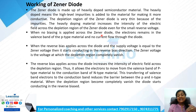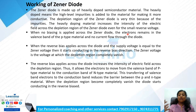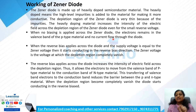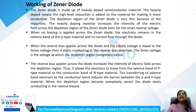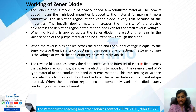The heavily doped material increases the intensity of the electric field across the depletion region of the Zener Diode even for small reverse voltage. When no bias is applied, electrons remain in the valence band of the P-type material and no current flows. When reverse bias is applied and the supply voltage equals the Zener diode voltage, it starts conducting in the reverse bias direction.